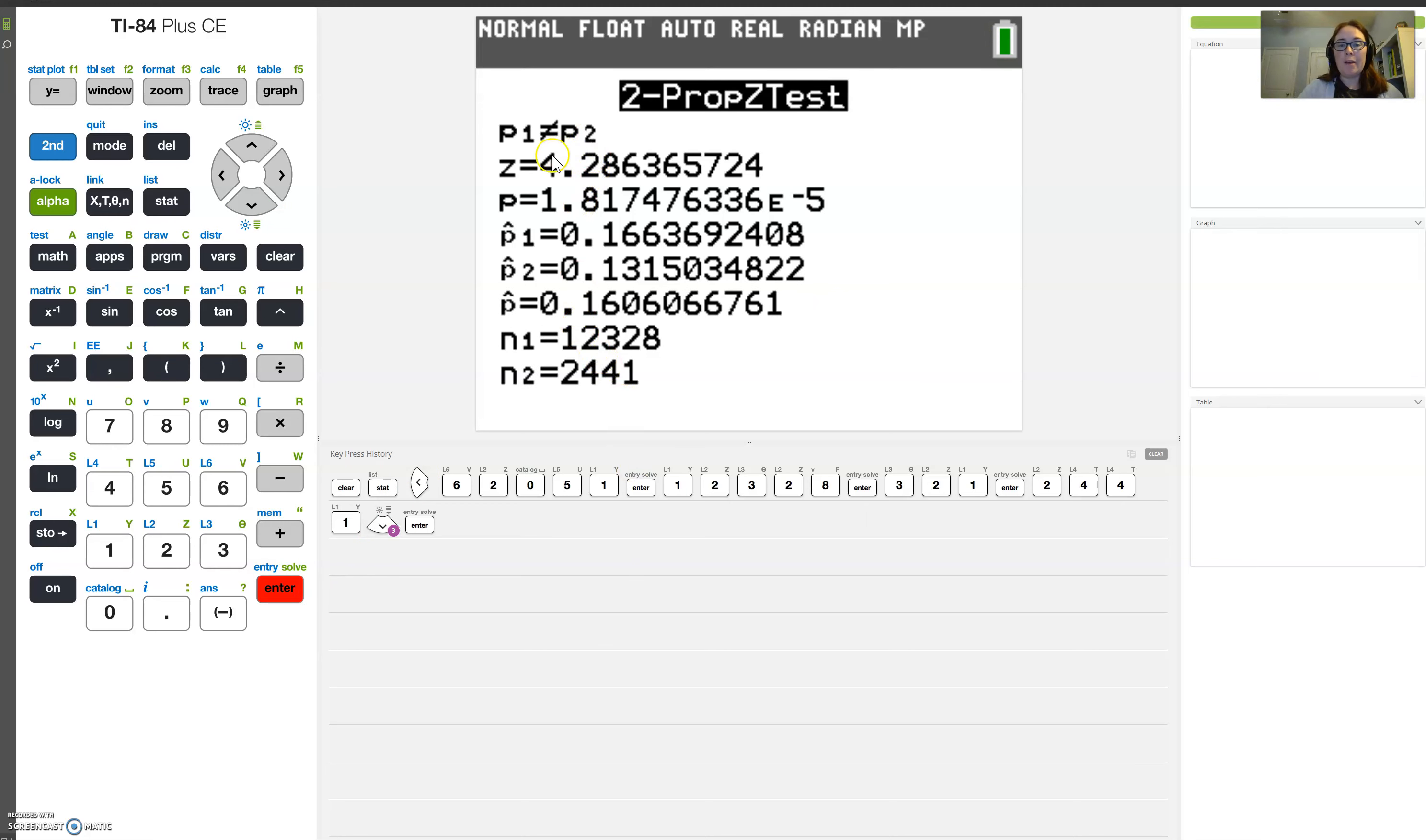And I get everything I need. I have the Z-score, about 4.286, and I also have the p-values, very tiny. This E here tells me this is scientific notation. This is about 1.8 times 10 to the negative fifth. And it also calculated things like p-hat 1 and p-hat 2 for me, which is nice, but I don't really need for the rest of this test.